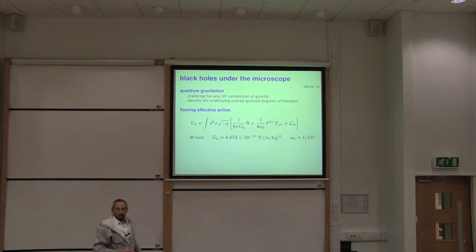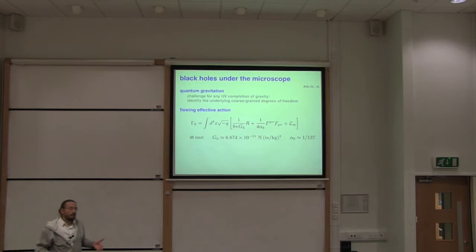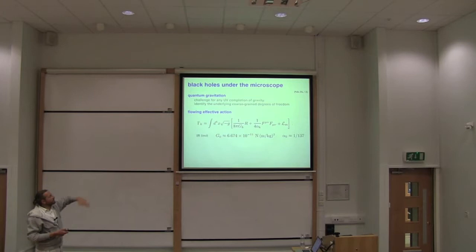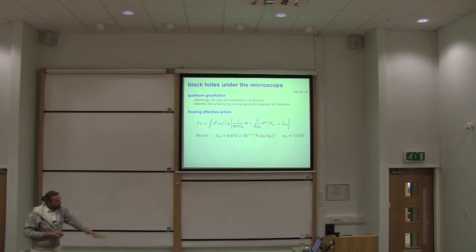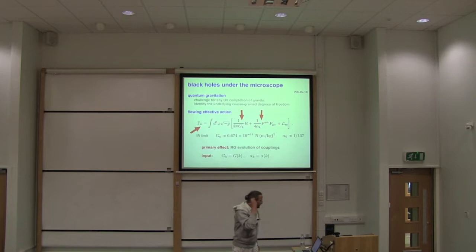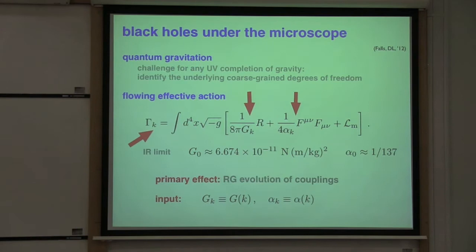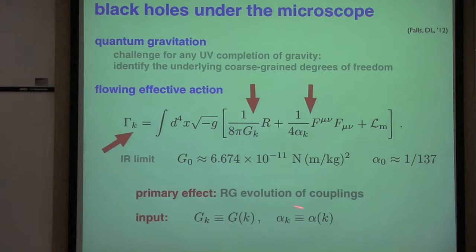This effective action at fixed K does not yet know much about the fluctuations of low energy modes with momenta smaller than K, but it should know everything about momentum modes larger than K. So if we send K to zero, that would mean that in the underlying path integral we have integrated out the fluctuations of all momentum modes, and we would end up with the full quantum effective action. In that sense gamma_K has an interpolating property, allowing us to interpolate between a high energy effective action at large K and the classical limit at low energies.